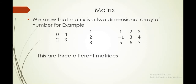Here is a matrix. A matrix is a two-dimensional array of numbers. Here we have a two-by-two matrix, that is two rows and two columns. This is a one-column matrix. And this is a three-by-three matrix, meaning three rows and three columns. These are three different matrices: two-by-two, three-by-three, and one with only one column.